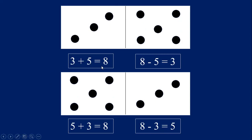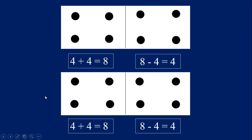Let's try the next fact family. The next fact family has the numbers three, five, and eight. Three plus five equals eight. Eight minus five equals three. Switch the order — five plus three equals eight. Eight minus three equals five. Good job!